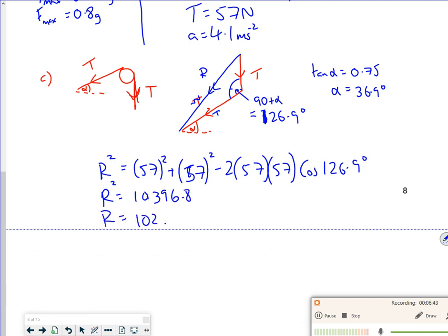So R squared comes out as 10396.8 and R is roughly about 102 newtons. So that's the resultant force.